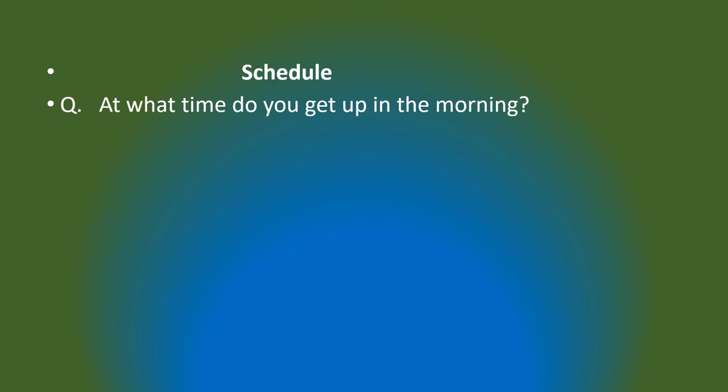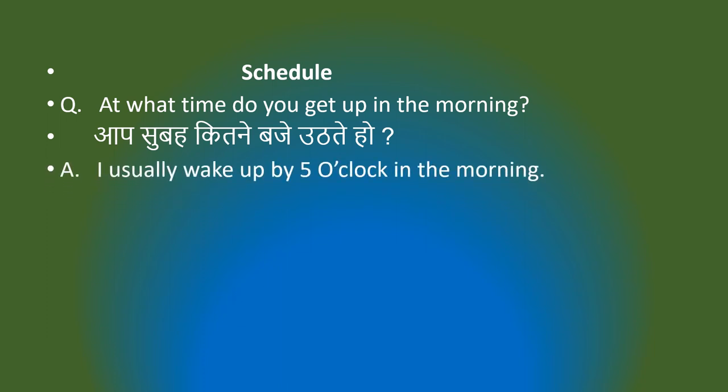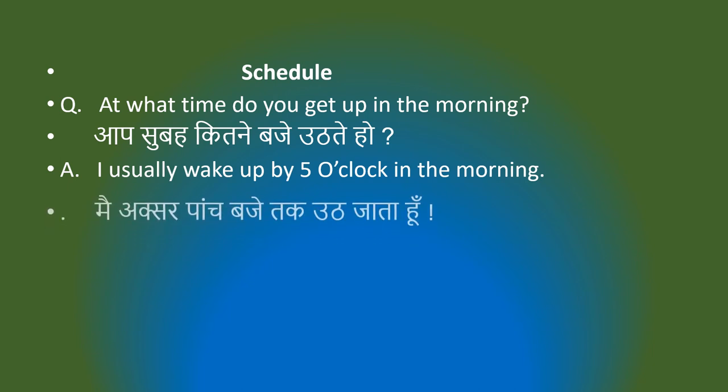The topic for question and answer is 'schedule', meaning anusuchi or karekram (timetable/programme). At what time do you get up in the morning? Aap subh kitnay vajay uthte ho? I usually wake up by 5 o'clock in the morning. Main subh 5 vajay tak uth jaata hoon.